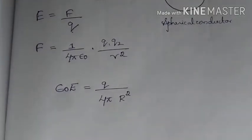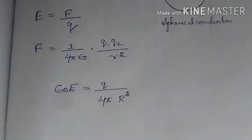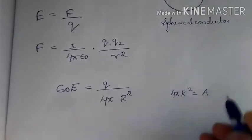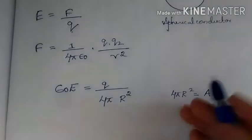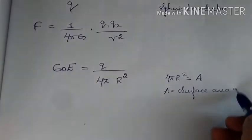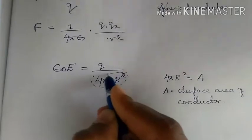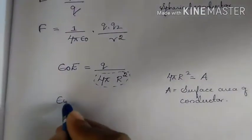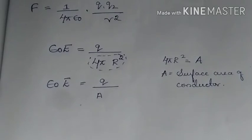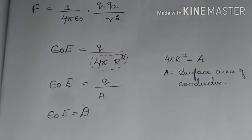The term 4π R squared gives the surface area of the conductor. Let A equal the surface area of the conductor. Replacing that term with A, we get epsilon naught E equals Q divided by A. Now I will write epsilon naught E equals D — this is the electric displacement.